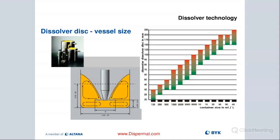An important consideration is the diameter of the blade in proportion to the container diameter — about one-third to two-thirds. There is a nice range, and depending on the viscosity and flow pattern, you can vary it. For example, if I have a one-liter container, I can go from a 30 all the way up to a 70 millimeter blade. The sweet spot in the lab is probably a 50 to 60 millimeter blade, depending on viscosity, to achieve really good results.